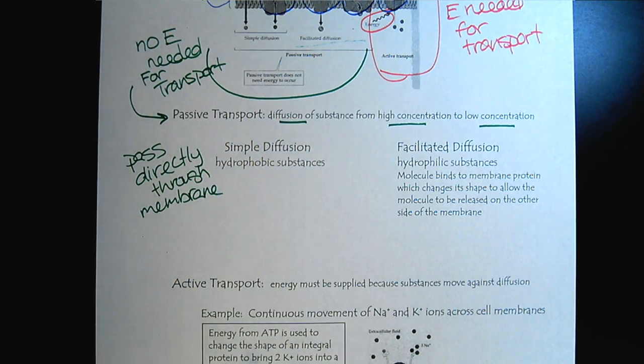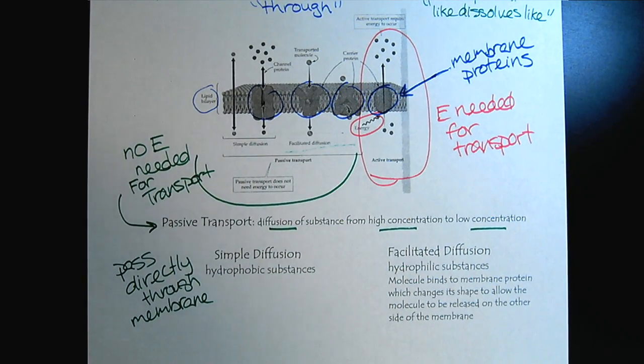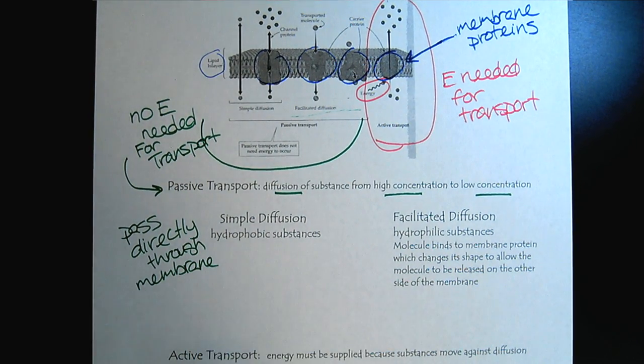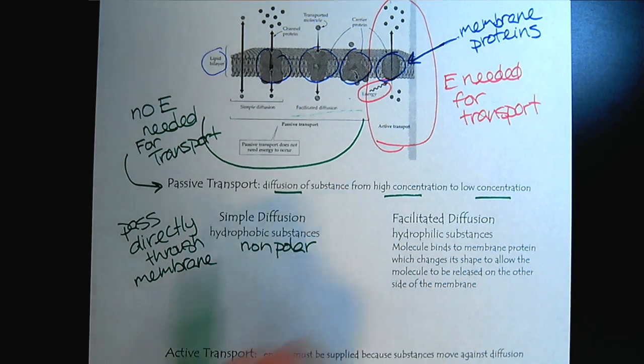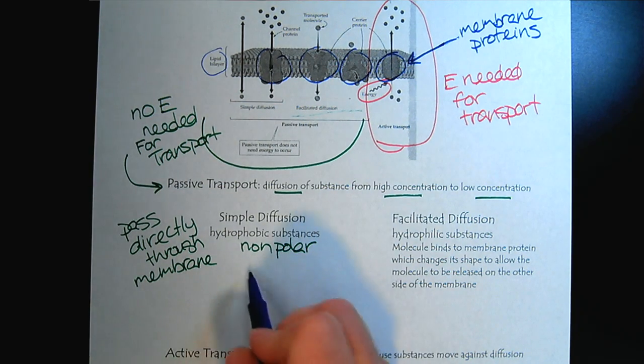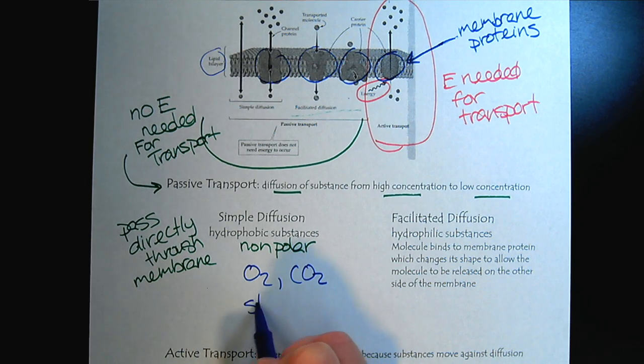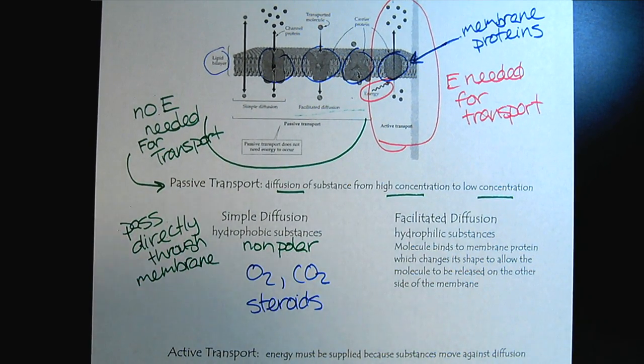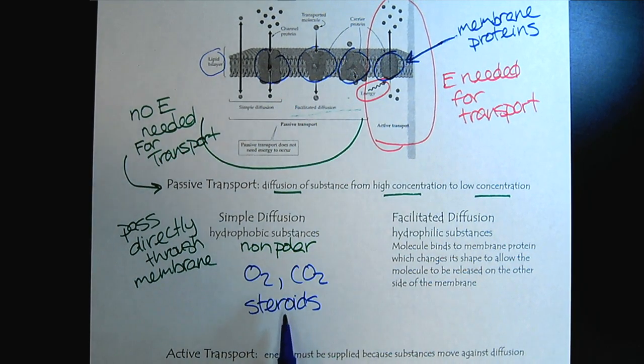All other forms of transport require some sort of membrane protein. So what kind of substances can just go straight through? Well, they're going to be hydrophobic, which is another way to say nonpolar. And so this would be, for example, like O2 and CO2 and the steroids, which we know show up as a variety of hormones in different substances. So stay tuned for cholesterol.